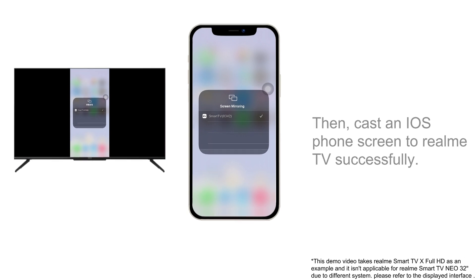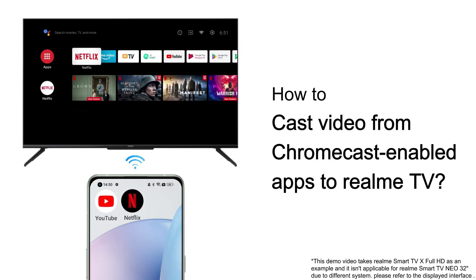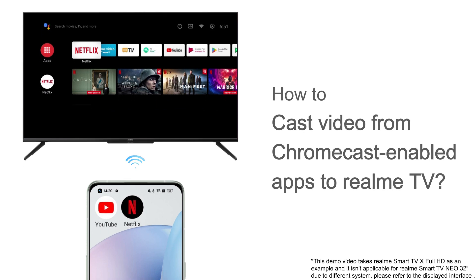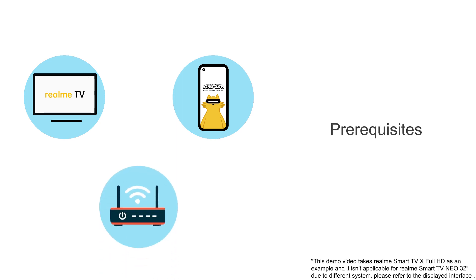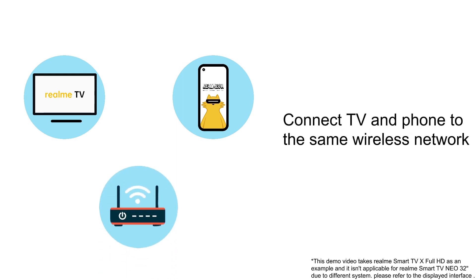The iOS device then casts the screen to Realme TV successfully. How to cast video from Chromecast-enabled apps to Realme TV — both iOS and Android devices support this method. Next, using an Android phone as an example: prepare a Realme Smart TV, a phone with a Chromecast-enabled app, and a wireless network. First, connect the TV and phone to the same wireless network.